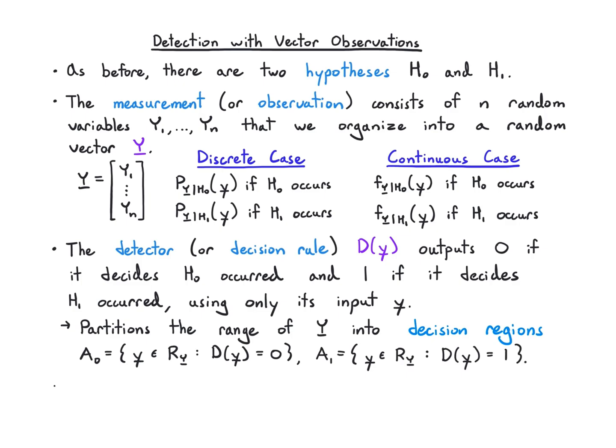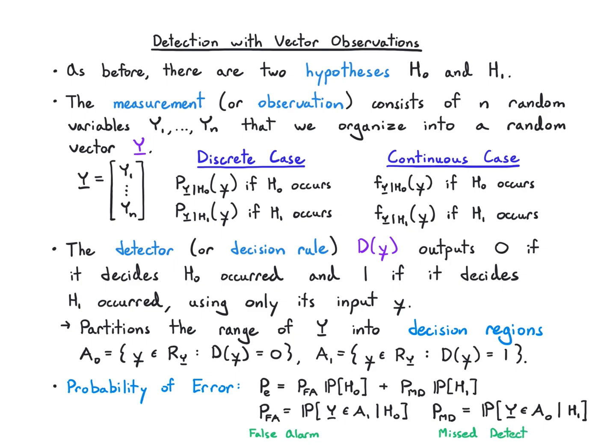And finally the probability of error is the thing we're interested in working with. That's the false alarm probability weighted by the probability of H0 plus the missed detection probability weighted by probability of H1. False alarm is when I decide A1 even though it's H0, miss detection is I decide A0 even though it's H1.